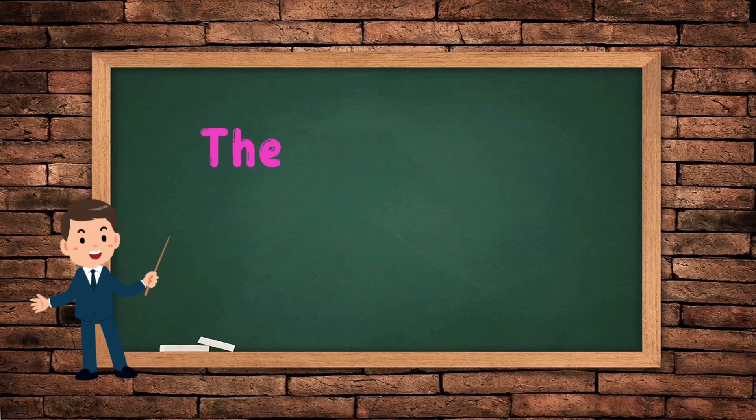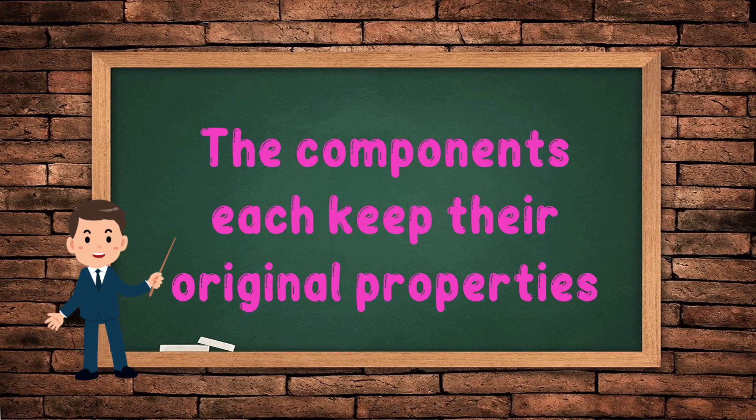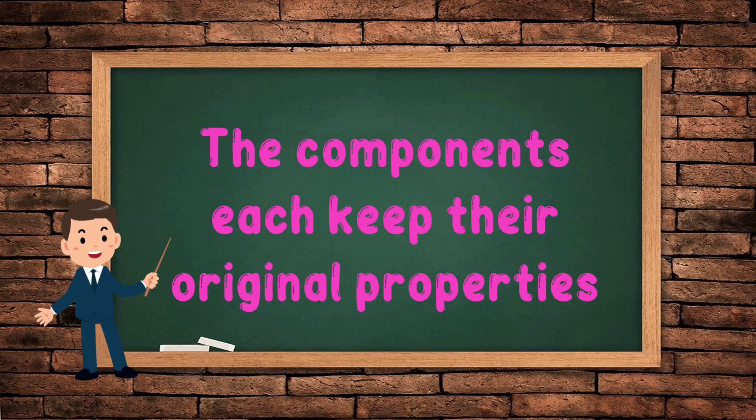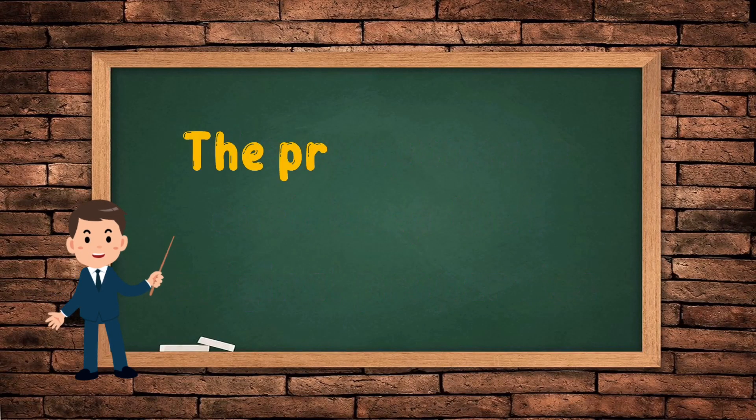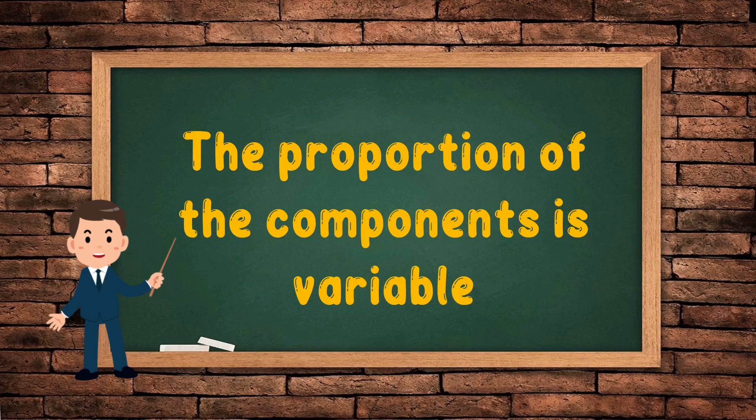Number two: The components each keep their original properties. Number three: The proportion of the components is variable.